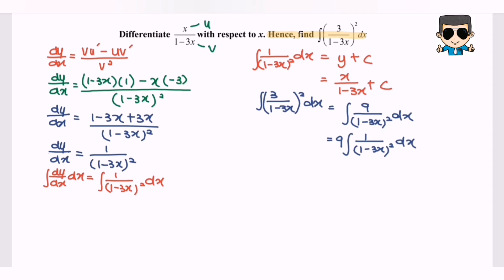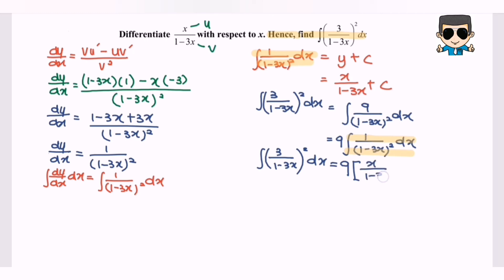Kindly refer to the situation: if we integrate, we can see it's equal to the established result. So integrating 3 over 1 minus 3x to the power of 2 with respect to x, and multiplying by 9, we integrate the expression to obtain 9 times x over 1 minus 3x plus c. So finally, 9x over 1 minus 3x plus c is our final answer.